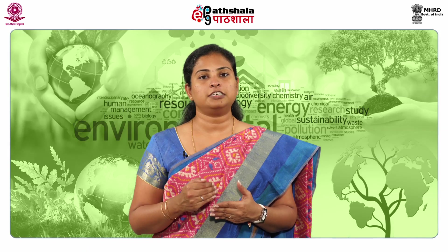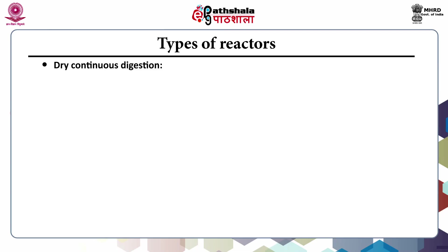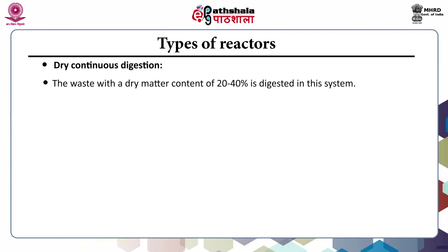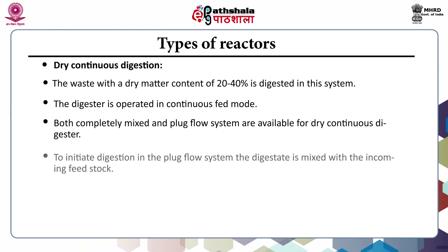Let us discuss the different types of reactors used in anaerobic digestion. The first is dry continuous digestion, where the dry matter content of 20 to 40% is digested continuously. The digester is operated in continuous mode; both completely mixed and plug flow systems are used. To initiate digestion in a plug flow system, the digestate is mixed with the incoming feedstock and then inserted.